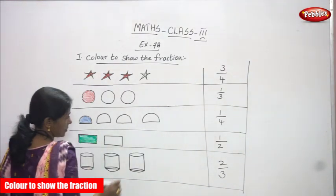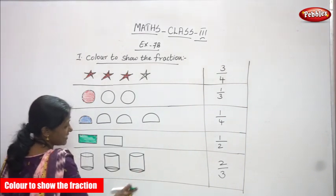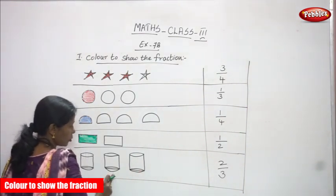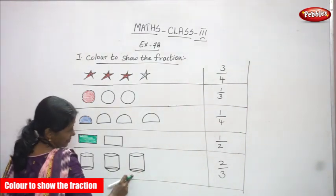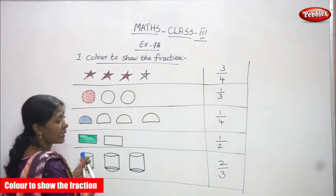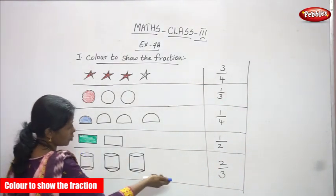Next, here three cylinders: one cylinder, two cylinder, three cylinders. I have to color only two cylinders.